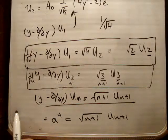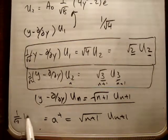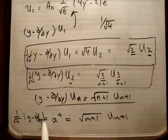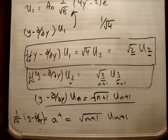Or if you want, you could write it like this. 1 over root 2, Y minus DDY. Alright, that's our creation operator.